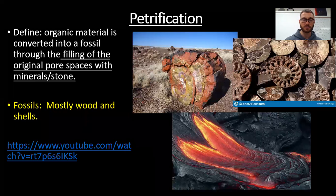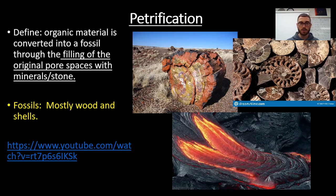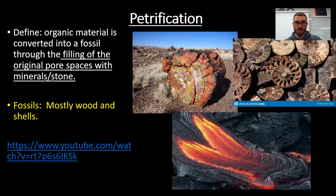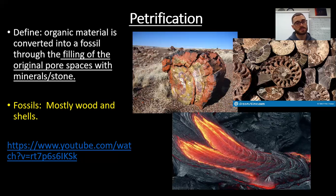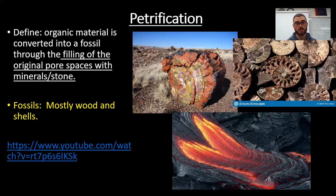Last category: petrification. Hot magma, molten rock, or lava flows over an area — maybe over a tree or seashells on a beach. Those structures are hard enough that they withstand total disintegration and actually become stone. Wood becomes stone and shells become stone by filling up the pores with rock. Mostly wood and shells are petrified; organisms are not really petrified because their tissue is much softer and doesn't withstand the heat and solidify as well.